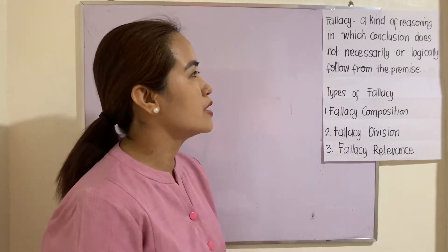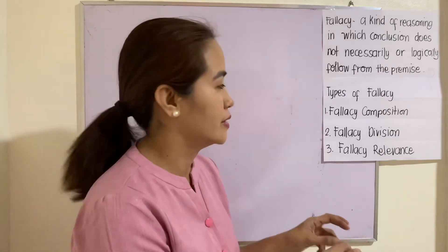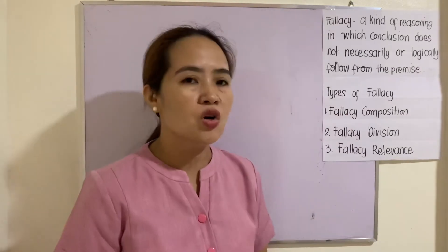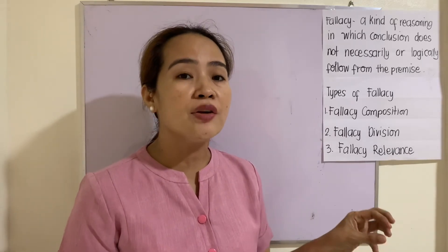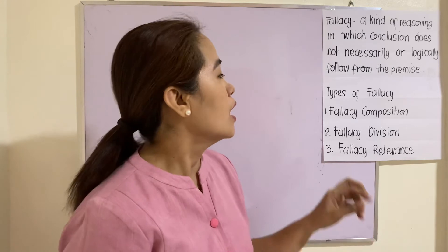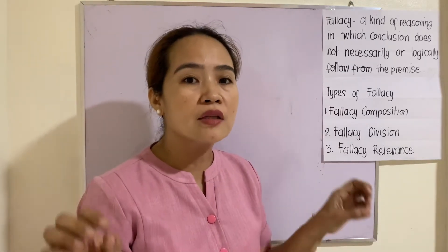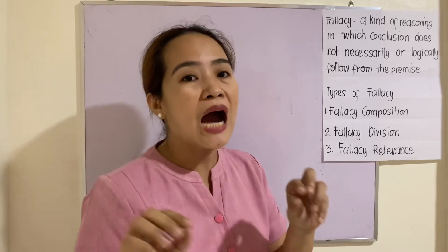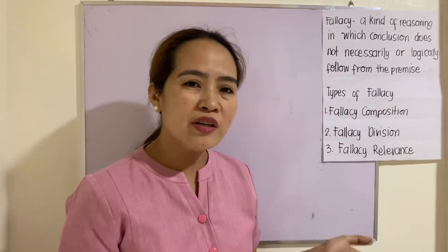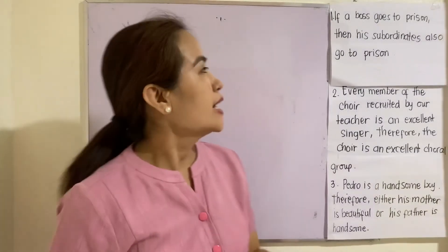Let us now go to fallacies. Fallacies are the kind of reasoning in which the conclusion does not necessarily or logically follow from the premise. Remember that the premise is our 'if' part. There are three types of fallacy: fallacy of composition, fallacy of division, and fallacy of relevance. Fallacy of composition is a fallacy in which the common characteristics of the individual parts are attributed to the whole.